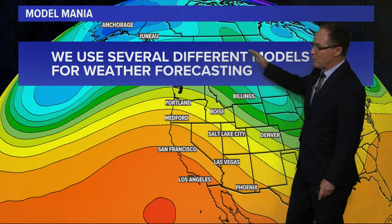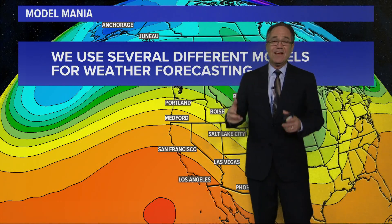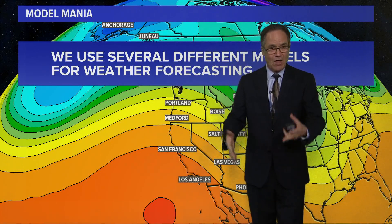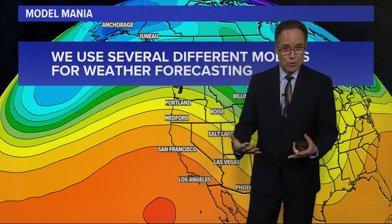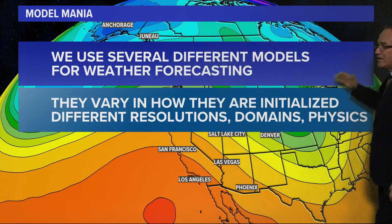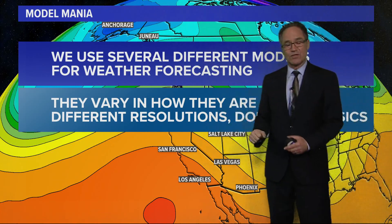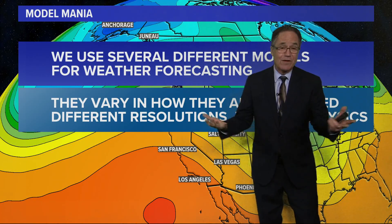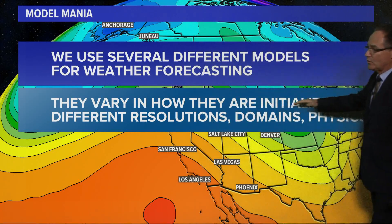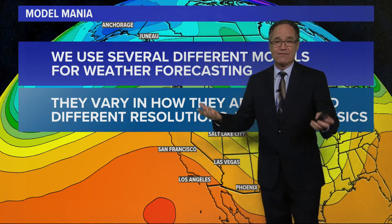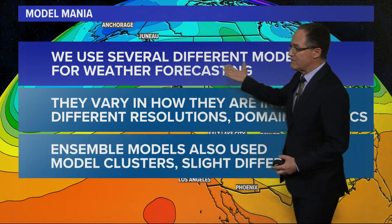I can think of about eight models off the top of my head, and there are more than that. To sum it up: we use several different models for forecasting because they each give us a slightly different answer. And here's the thing — if they all converge on one answer, it gives us a lot more confidence that the models know what they're talking about, and that leads to a better forecast. They vary in how they are initialized, their resolution — some are really good at representing terrain, some don't even have terrain. They have different domains: some are global, some cover only a limited area, and they have different physics as well.